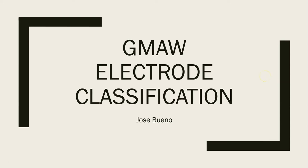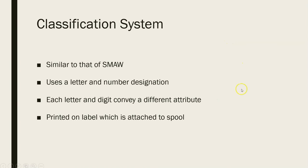Alright everyone, so in this next section we're going to be talking about electrode classification for gas metal arc welding. If you remember from shielded metal arc welding, every single stick electrode had its own identifier — its own code or classification to let you know some information about the electrode, so you could tell whether or not you're using the correct electrode for whatever you're working on. Well, with GMAW it's really no different. There's still a series of letters and numbers that are going to give you bits and pieces of information about the electrode.